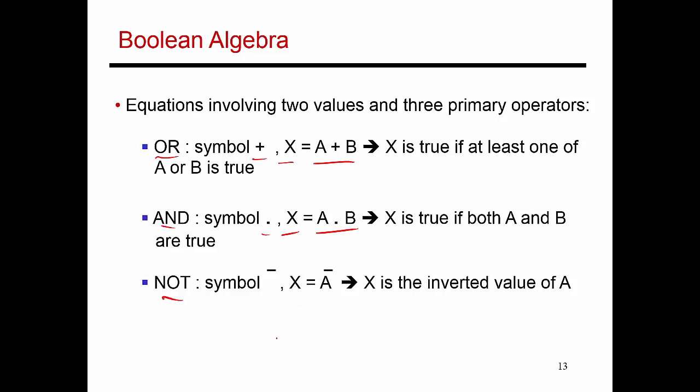With the NOT gate, it's nothing but an inverter. That means whatever input I provide, whatever input A I provide, my output X is going to be the exact opposite value.